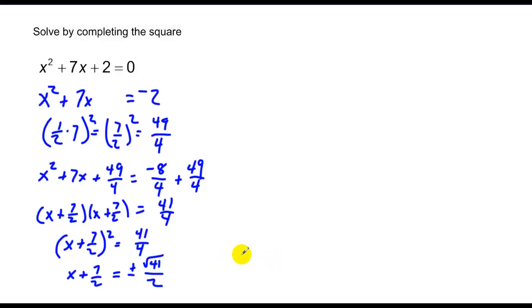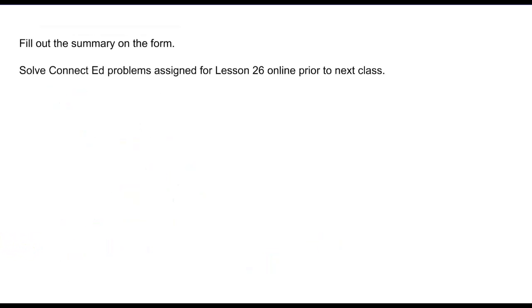Therefore, my solution is x equals negative 7 over 2 plus or minus square root of 41 over 2. And I'm done. Again, pretty much a review of last year. Do your lesson summary and your EdConnect and we'll talk to you tomorrow.